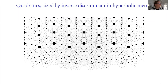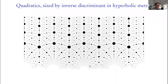In this picture, this is the upper half plane, with the real line down here and i right here. I'm sizing the dots by the inverse discriminant, and also scaling by the hyperbolic metric because the dots crowd up as you head towards the real line, so I'm shrinking them in that direction. When you do this, you get a ton of structure. One of the things I want to do is explain what's happening in this picture.